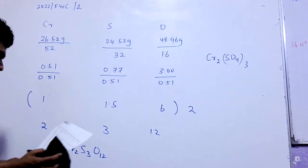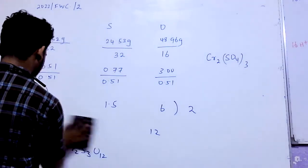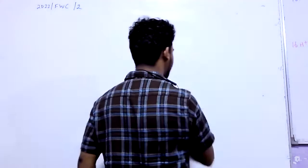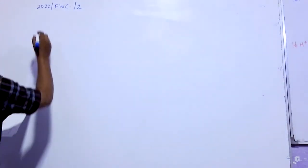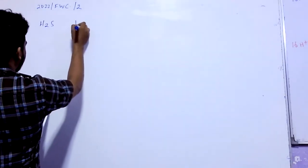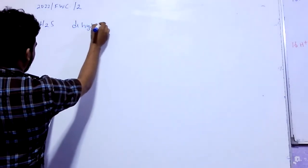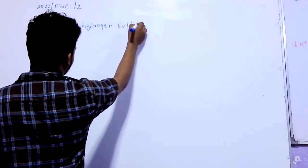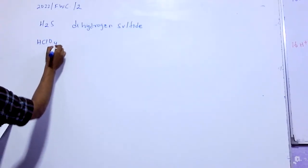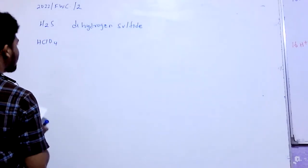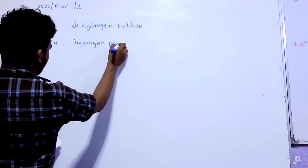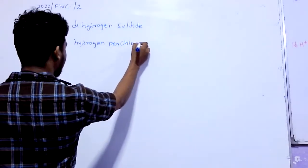Okay. There are two and three. You can say that with the IUPAC — if you understand IUPAC, that is H2S: dihydrogen sulphite. HClO4: hydrogen perchloride.